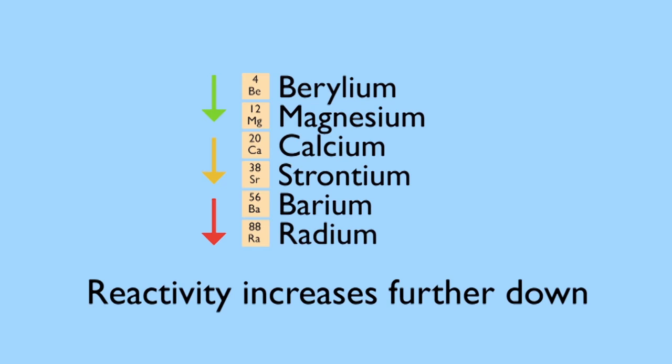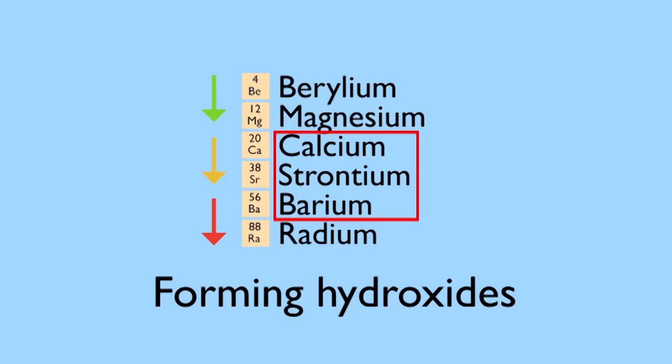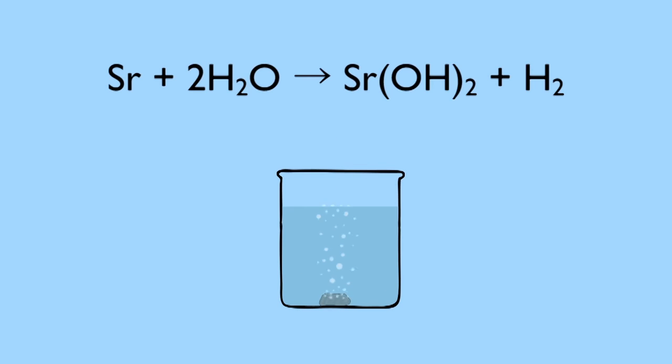The elements below, calcium, strontium and barium, will react with water to form their hydroxides, though in each case less vigorously than their group one neighbour. If we drop some strontium metal into our beaker of water, it will sink to the bottom. Small bubbles of hydrogen gas then appear on its surface, showing the reaction is taking place.